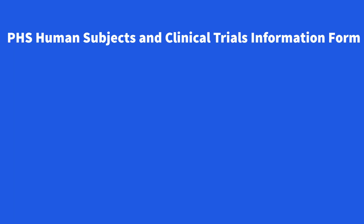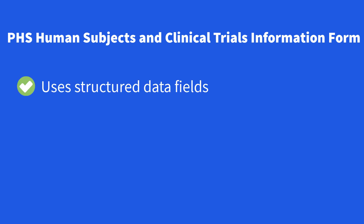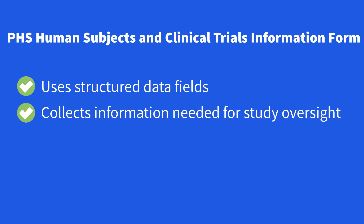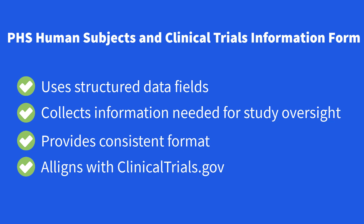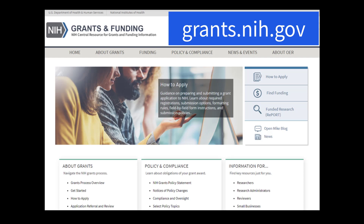We've seen how our PHS Human Subjects and Clinical Trials Information Form uses structured data fields to lead you through key requirements, collects the information needed for appropriate study oversight, provides a consistent format for reviewers and staff to quickly find key information, and aligns with ClinicalTrials.gov for data exchange between systems. For field-by-field guidance for completing the PHS Human Subjects and Clinical Trials Information Form, check out the resources on our How to Apply Application Guide page on the Grants.nih.gov website.